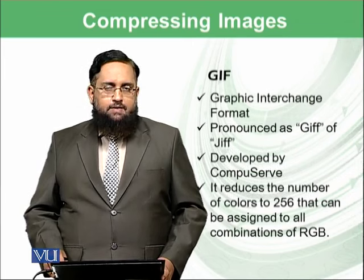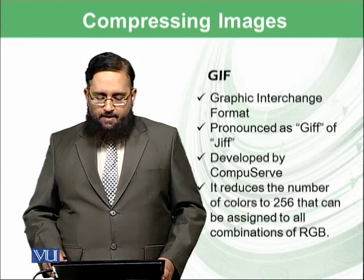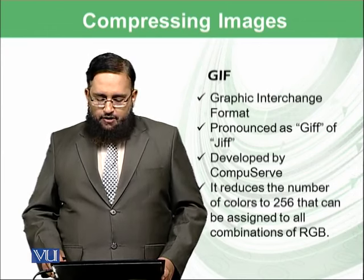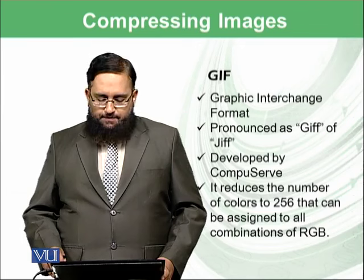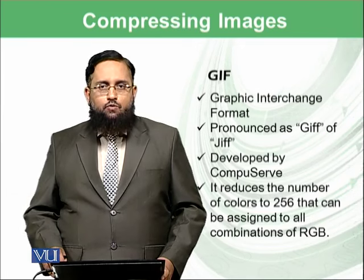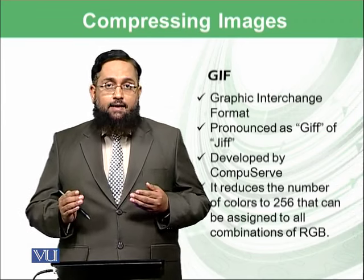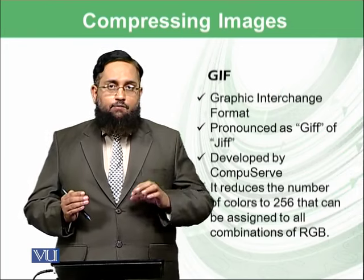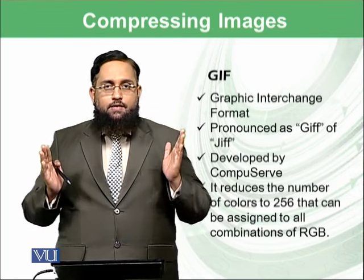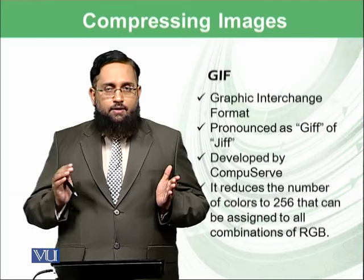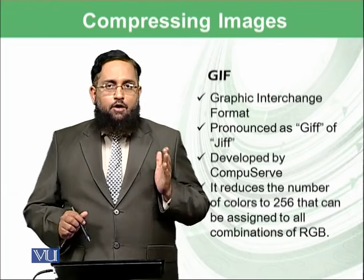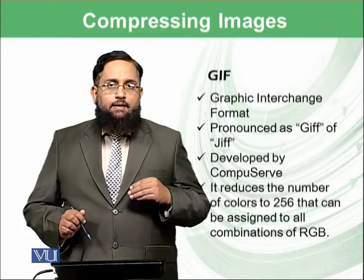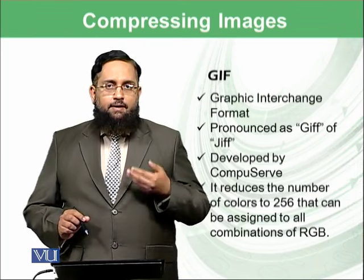GIF — that is a format known as Graphic Interchange Format, and it is pronounced as GIF or some people pronounce it as GIF. It was developed by CompuServe and it reduces the number of colors to 256 colors. We have already learned that color images are stored with 1 byte for red, 1 byte for green, and 1 byte for blue — RGB. So all of these 24 bits are now going to be converted in GIF format to 1 byte, which is 8 bits, reducing the image size by approximately 3 times.